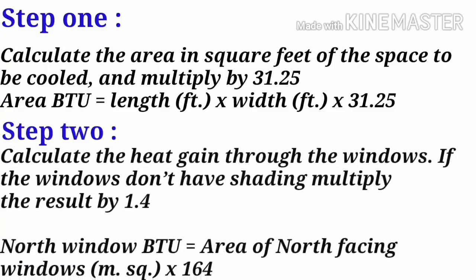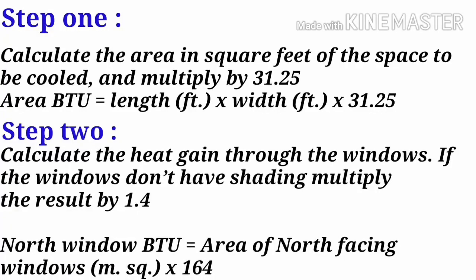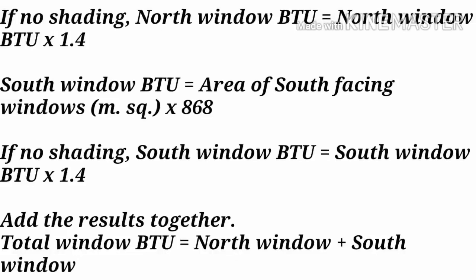Step 2: Calculate the heat gain through the windows. If the windows don't have shading, multiply the result by 1.4. North Window (BTU) equals area of north-facing windows in square meters multiplied by 164. If no shading: North Window (BTU) equals North Window (BTU) multiplied by 1.4. Similarly for south-facing windows — if no shading, South Window (BTU) equals South Window (BTU) multiplied by 1.4. Add the results together: Total Window (BTU) equals North Window plus South Window.